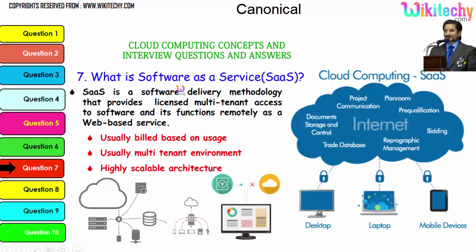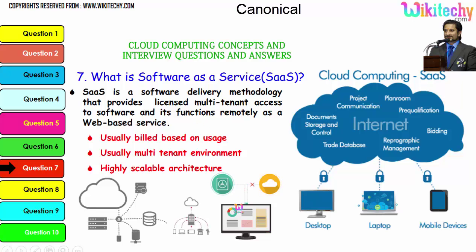Software as a Service (SaaS) is a software delivery methodology that provides licensed multi-tenant access to software, functioning remotely as a web-based service. It is usually billed based on usage, operates in a multi-tenant environment, and has a highly scalable architecture. Essentially, you rent software from the cloud and access it via a browser.